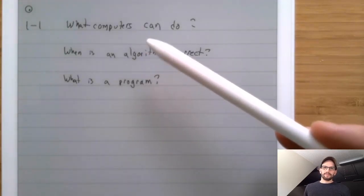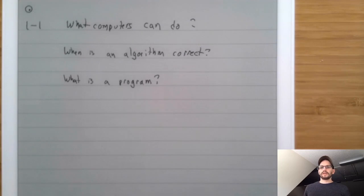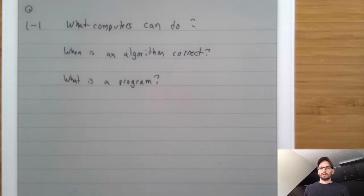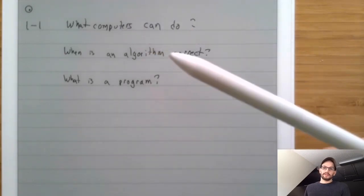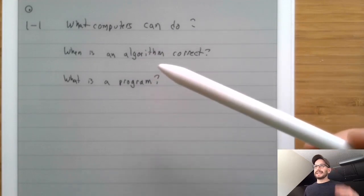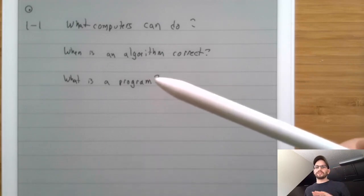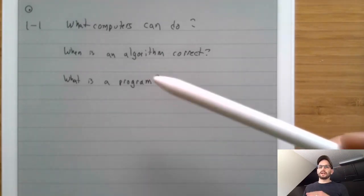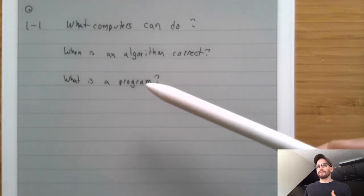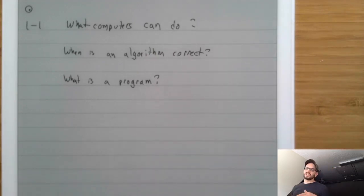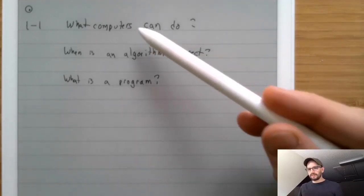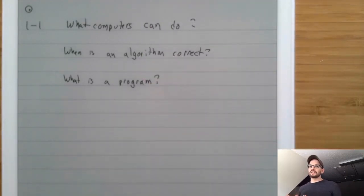Notice that in the first question we use the word 'computer,' in the second we use 'algorithm,' and in the third we use 'program.' In common discussion these are distinct things. Normally when we say computer, we mean some physical piece of hardware. When we say algorithm, we typically mean an idea you might write in pseudocode — not a physical artifact, not a computer, but also not a software program. When we say program, we typically mean a piece of source code, probably compiled and runnable, that can actually run and do something. One of the things we'll talk about is how all of these ideas — computer, algorithm, and program — are really identical from the perspective of mathematics and computer science theory.